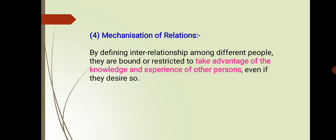The last disadvantage is mechanization of relations. By defining inter-relationships among different people, they are bound or restricted to take advantage of the knowledge and experience of other persons, even if their desire is to do so. We define what each person's role is — who is superior and who is subordinate. So this is how we bound and restrict them. So these are the demerits, drawbacks, or limitations of formal organization.